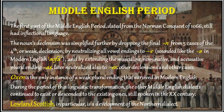This simplification occurred by neutralizing all vowel endings to E, sounded like the A in modern English 'sofa', and by extending the masculine nominative and accusative plural ending -as, later neutralized also to -s, to other declensions and other cases. Oxen is the only instance of a weak plural ending that survived in modern English. During this period of linguistic transformation, the other Middle English dialects continued to exist, still spoken in the 20th century.